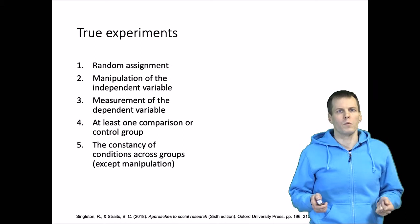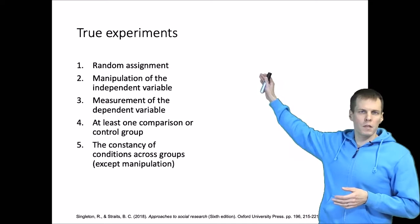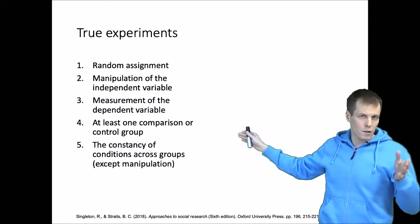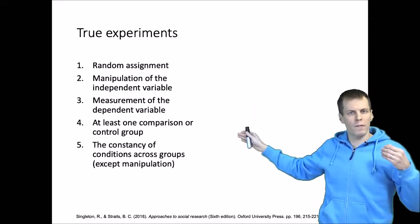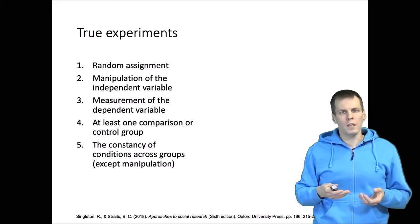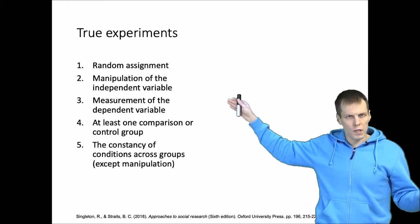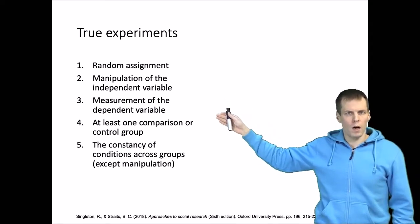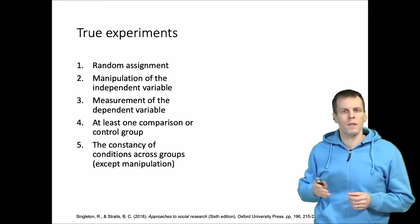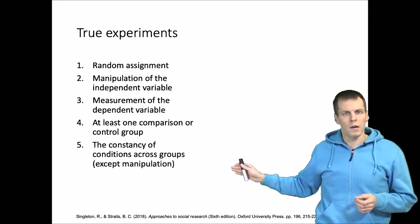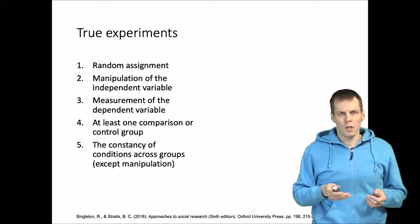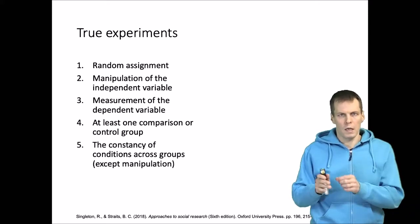The idea of a true experiment is that we have five characteristics. First, we have random assignment, so we randomize people into at least two groups — the treatment group and the control group. Then we manipulate the main independent variable, whether one group gets the treatment and the other doesn't. We measure the outcome from both groups and compare the difference, and fifth, importantly, there must be experimental control in the sense that these groups undergo the same procedures except for the treatment.